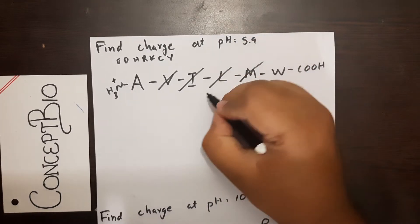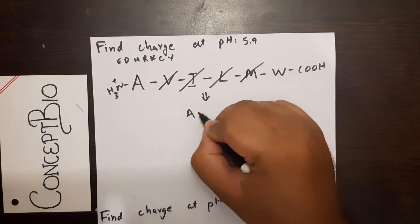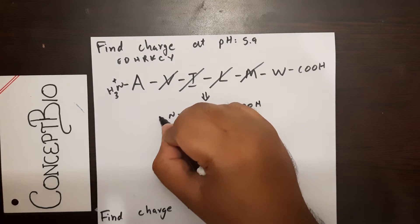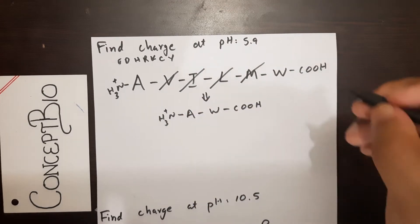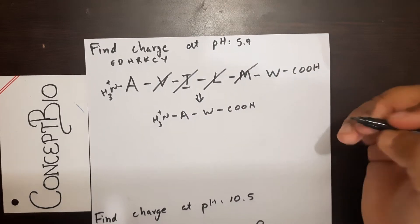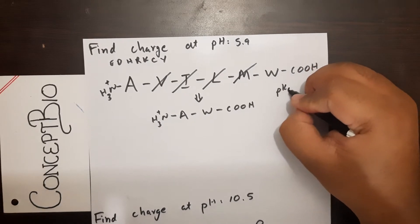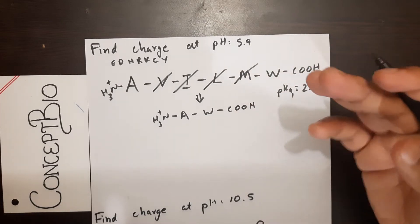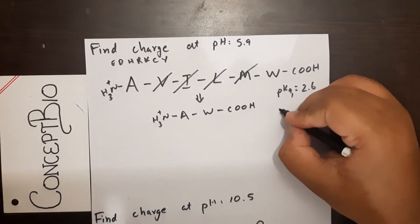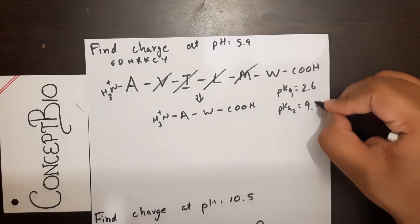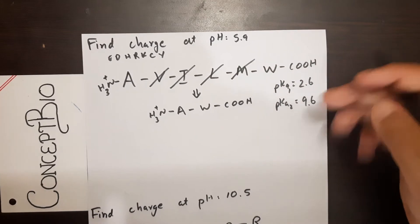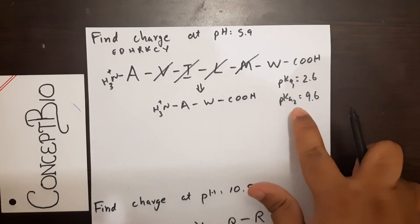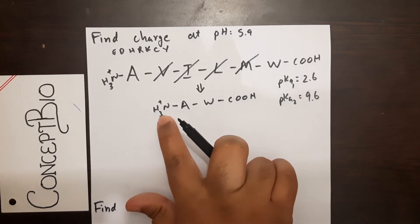Now this effectively becomes NH3+ - COOH. What we have to know for doing all these calculations is pKa1 is always around 2.6 approximately unless given, and pKa2 is always around 9.6. Remember, pKa1 always corresponds to the alpha carboxyl group, and pKa2 always corresponds to the alpha amino group.